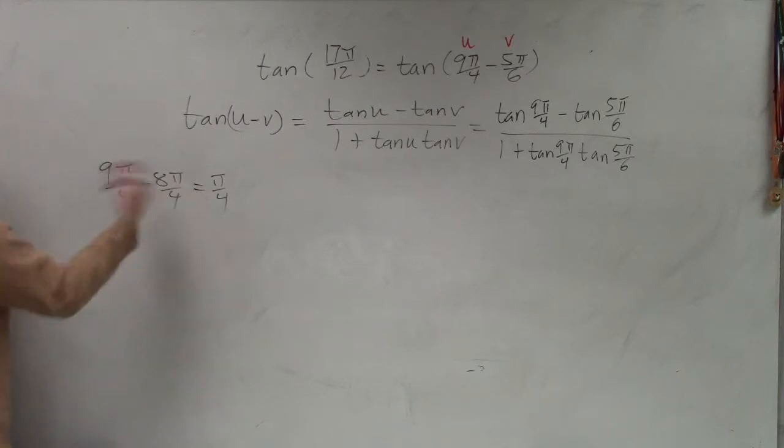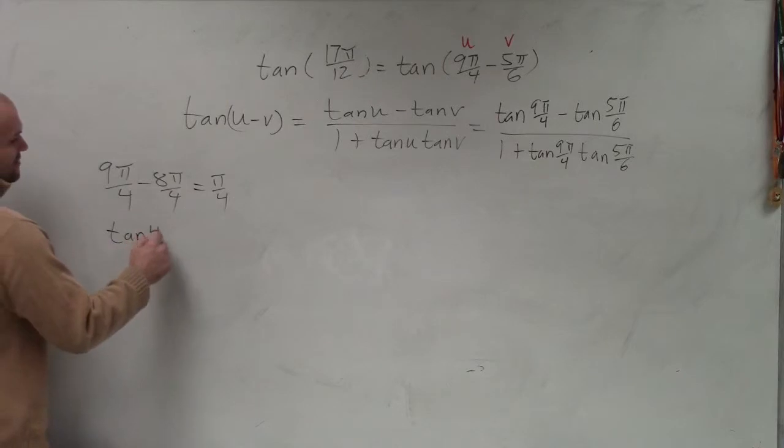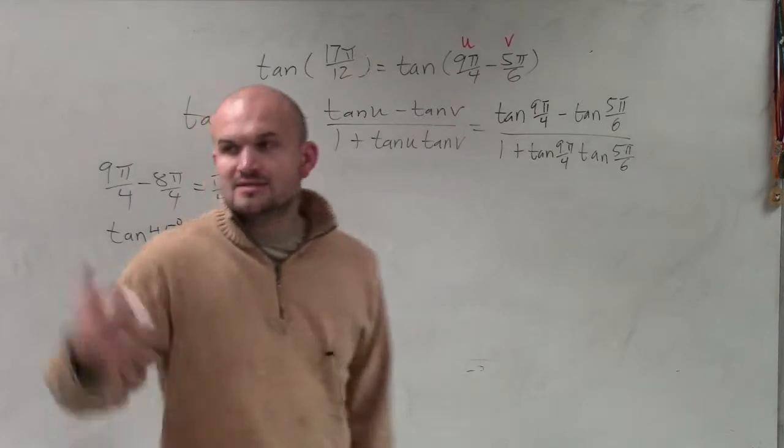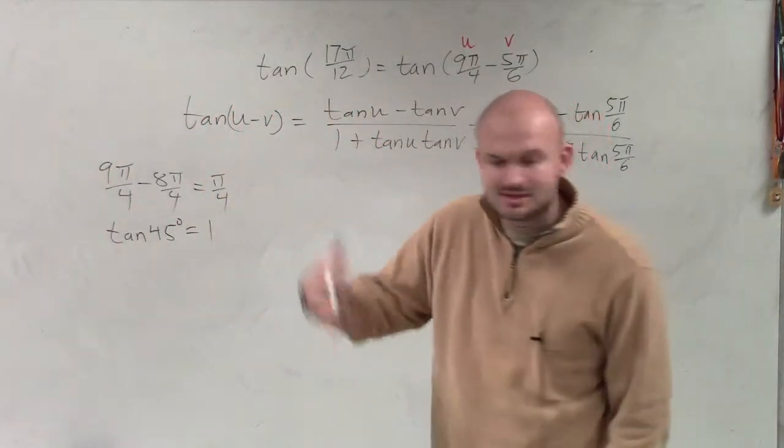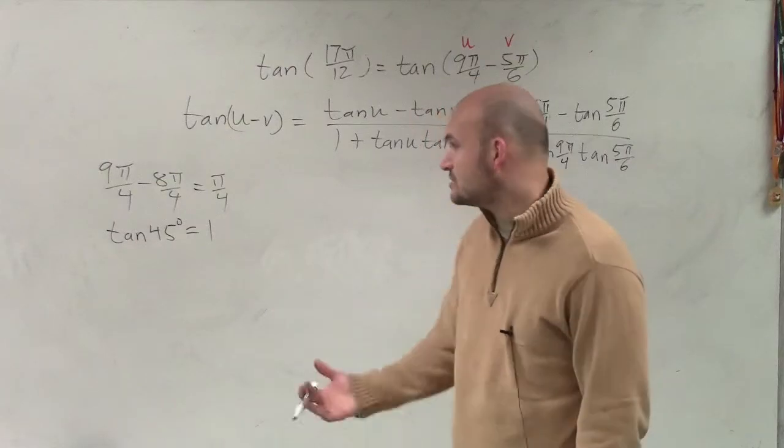You could also use reference angles to find π/4 if you wanted to as well. But anyways, π/4, we know on the unit circle, that coordinate point is √2/2 divided by √2/2, right? So we know tangent of 45 degrees per the unit circle is going to be 1, right? The y over the x-coordinate, same as we did last problem. It's the same point over the same point, or same coordinate over the same coordinate, so therefore it's 1.